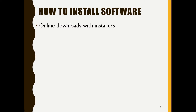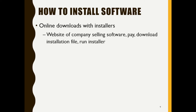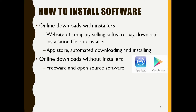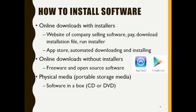Now let's look at software installation. We can install software through online downloads with installers — you pay, download, and run the installer file, which you also do via the app store. There are also online downloads without installers, such as freeware or open source software. Additionally, you can install software via physical media like a USB flash drive, CD, or DVD.